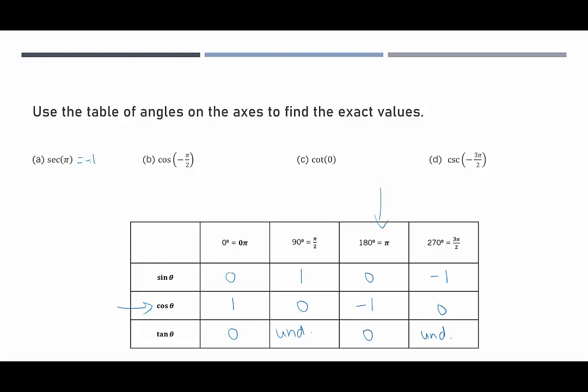How about cosine of negative pi over 2? So negative pi over 2, where do we find that? That's if we go 90 degrees clockwise. That's going to actually put us here. It's going to be equivalent, or what we're looking at is 0, negative 1. So it's going to be equivalent to 270 degrees.